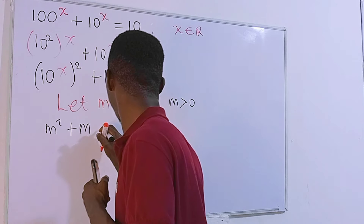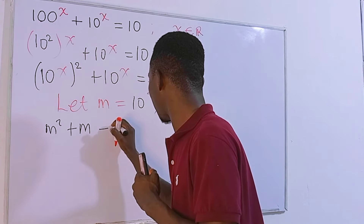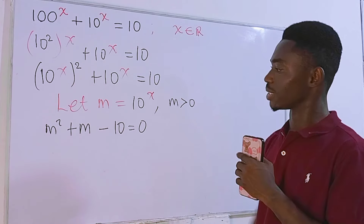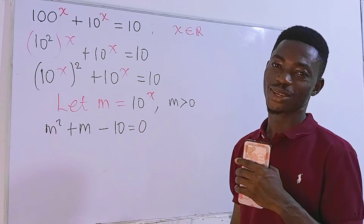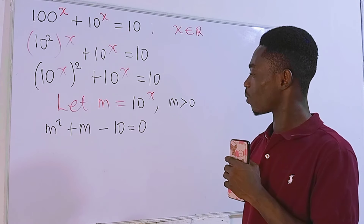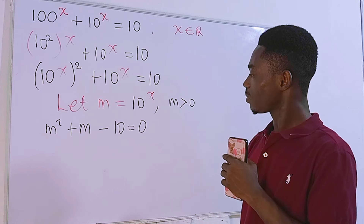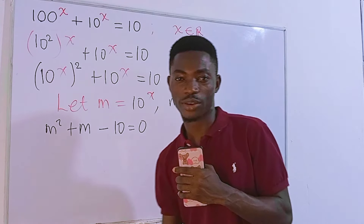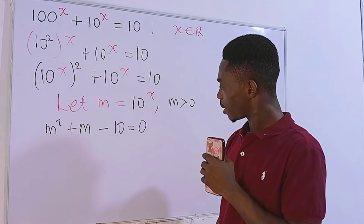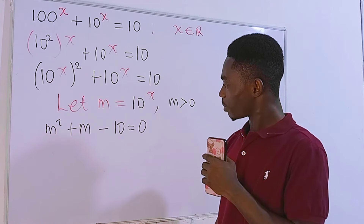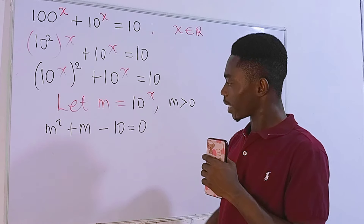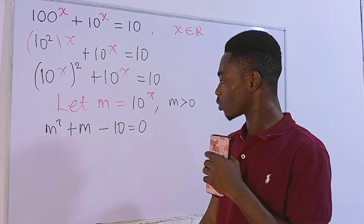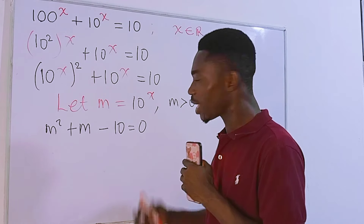Our new equation becomes m squared plus m minus 10 equals zero. There are many ways to solve a quadratic equation. The easiest is factoring, but factoring doesn't appear to work here. The quadratic formula would work but is long, so let's use completing the square.